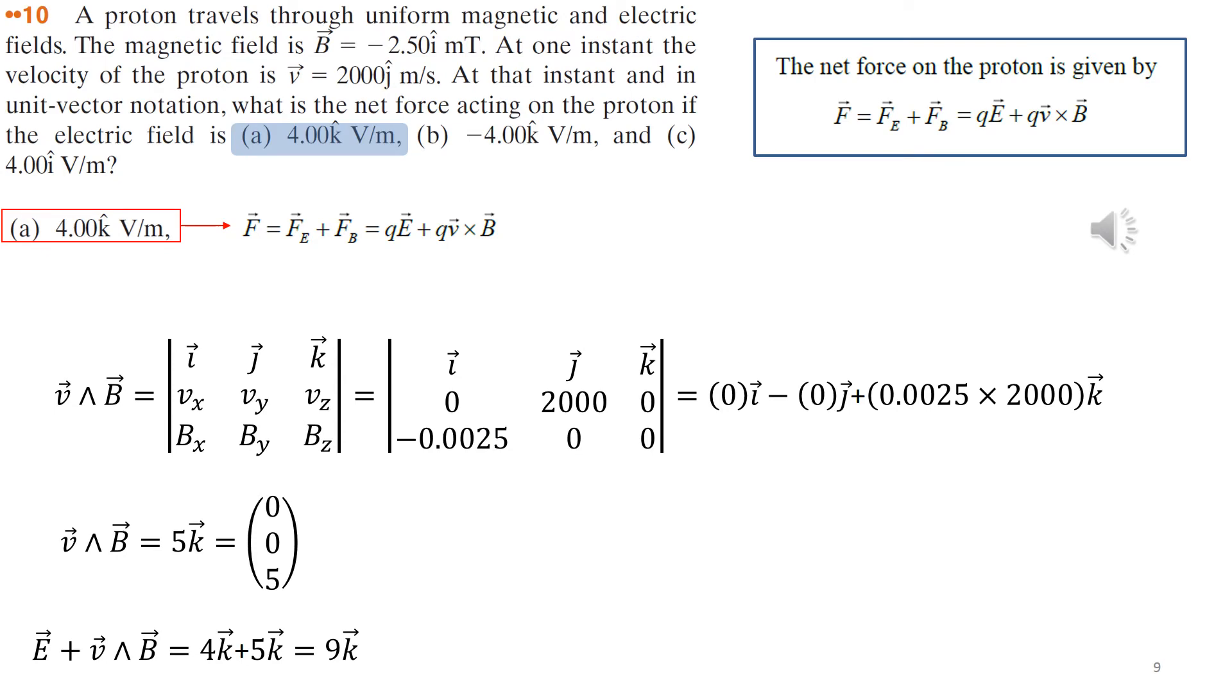In this problem, we have a proton that is traveling in a magnetic and an electric field, with a certain velocity V is given. And the directions are given, because the vector V is magnitude and direction at the same time. And the electric field is given as a vector, and K, or I, or J are the directions.